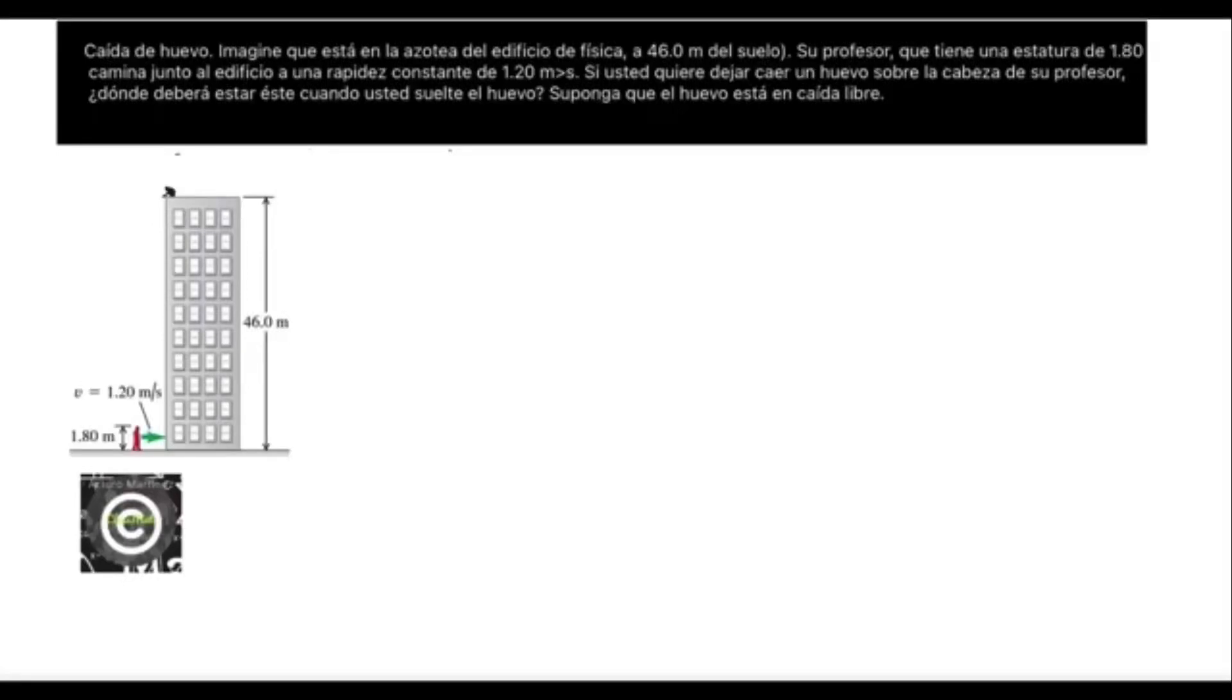Imagine that you are on the roof of the physics building at 46 meters from the ground. Your teacher, who is 1.80 meters tall, walks next to the building at a constant speed of 1.20 meters per second. If you want to drop an egg on your teacher's head, where should they be when you drop the egg?